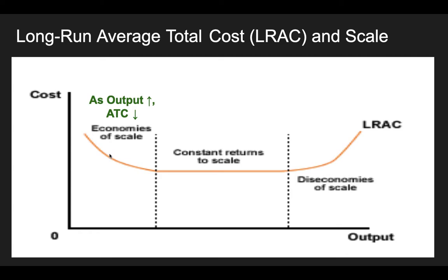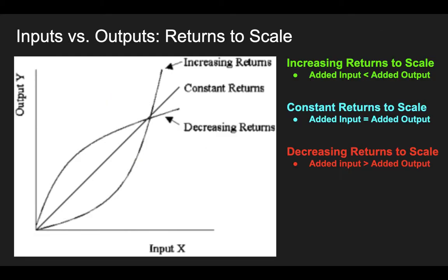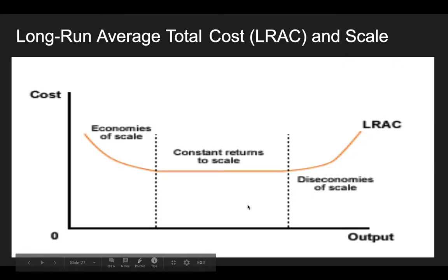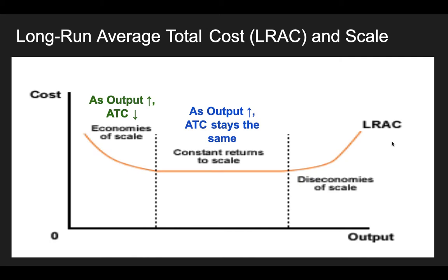This is usually true for young companies, because they start with big startup costs early on — like the ship we talked about. If we're starting a shipping company, I've got to buy a fleet of cargo ships. But as we produce, that average cost starts to come down and we get more efficient. Then eventually you get to a point in your business where you are experiencing constant returns to scale. With constant returns to scale on the ATC curve, as output increases, ATC is staying the same. We're talking about as we're changing output — as we're increasing output, average cost is staying the same.